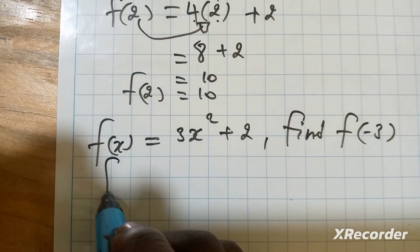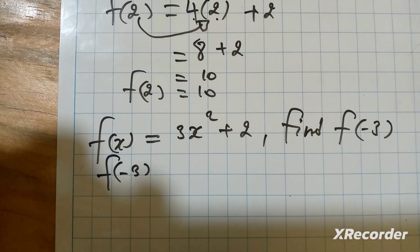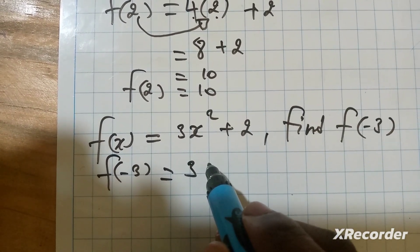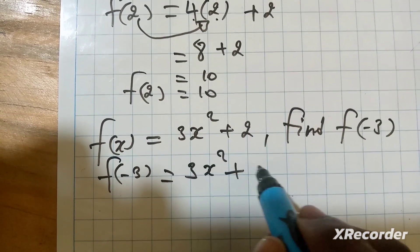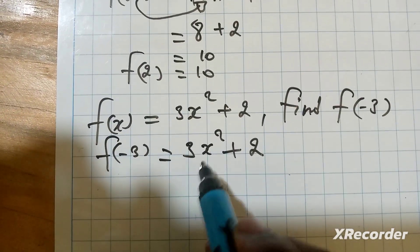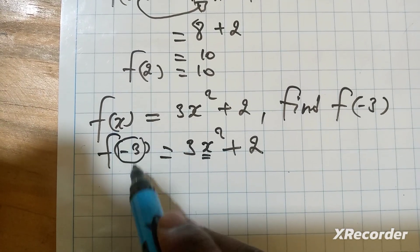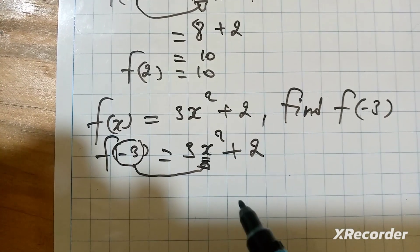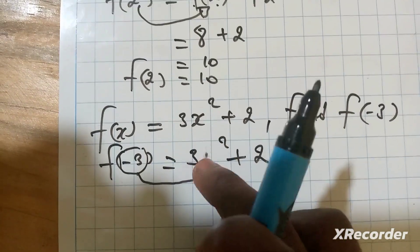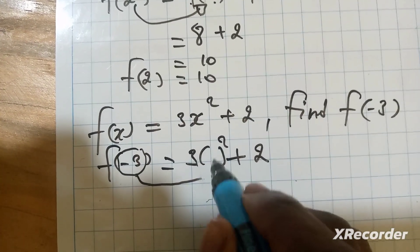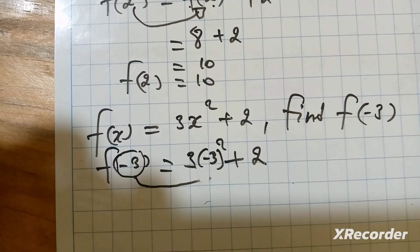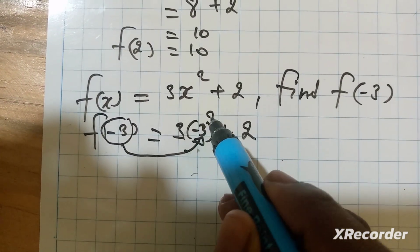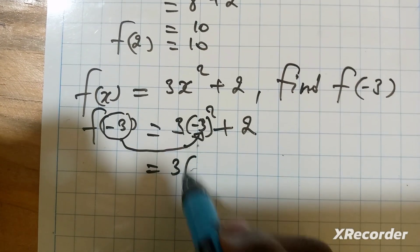You see that we have f of negative 3. This one will be 3, then x squared plus 2. Instead of writing this x, we take this negative 3. We will replace this x by negative 3. It means you come and put here negative 3. When you put this negative 3, you see that negative 3 squared will be 9.